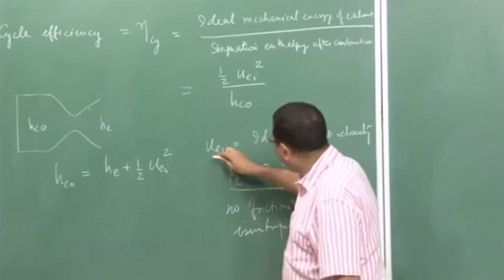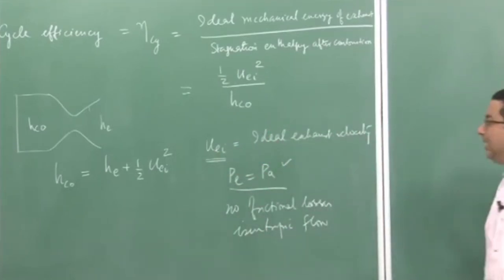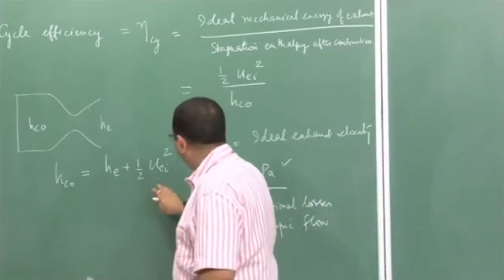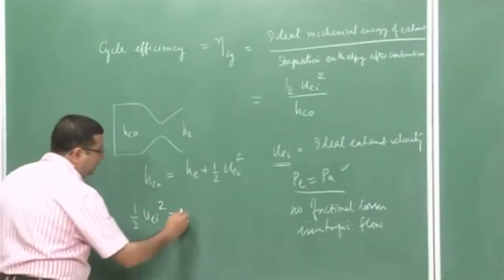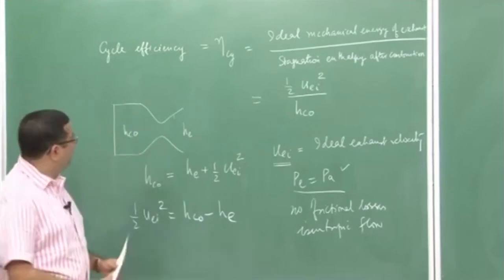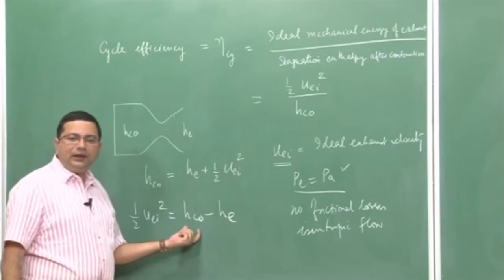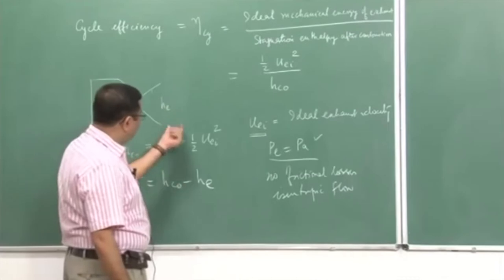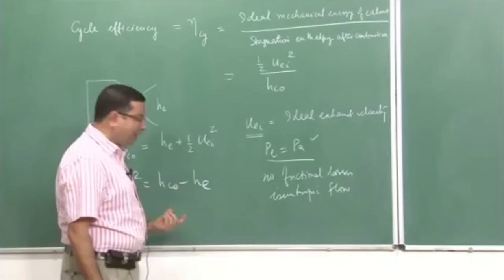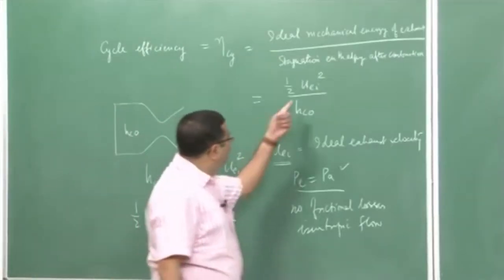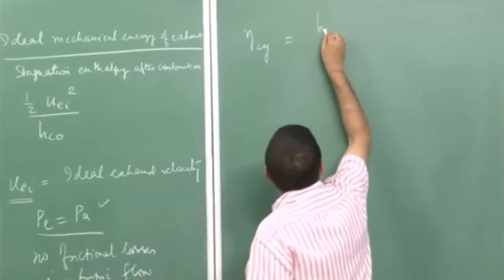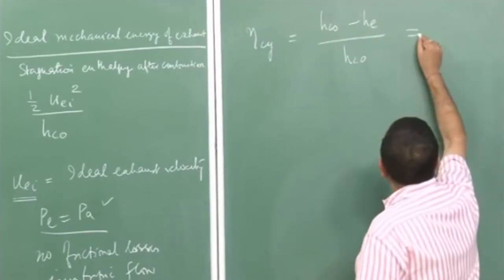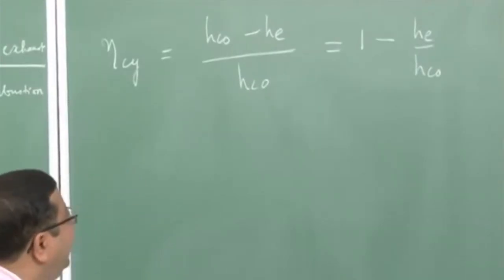The cycle efficiency is defined with respect to the ideal kinetic energy and the stagnation enthalpy at the exit of the combustion chamber or inlet of the nozzle. Combining these, ½U_EI² is nothing but the difference in enthalpy between the inlet and exit of the nozzle. At the inlet the enthalpy is the stagnation enthalpy, and at the exit it is the static enthalpy h_E. So the cycle efficiency is: η_cy = (H_c0 − h_E) / H_c0 = 1 − h_E / H_c0.